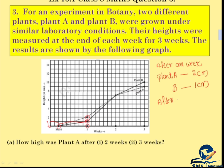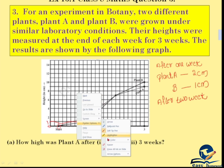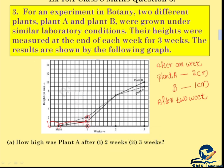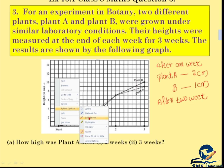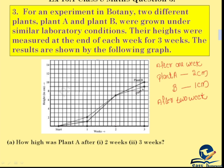After 2 weeks, let's look at the graph. Plant A is the dotted line. After 1 week it is 2 cm. Now at 2 weeks, corresponding to 2 weeks on the graph, we can see it is 6 cm or 8 cm area.